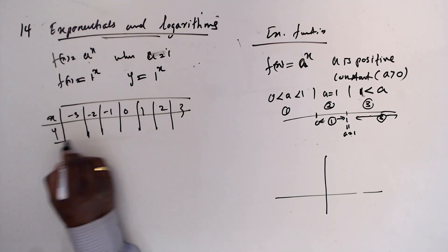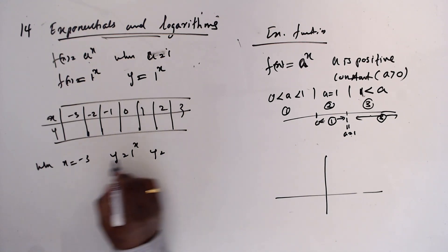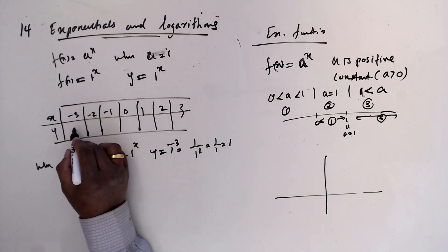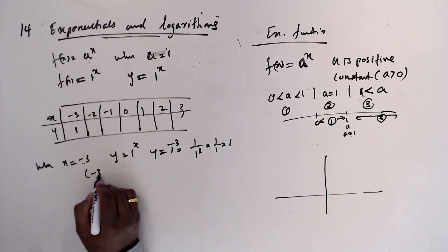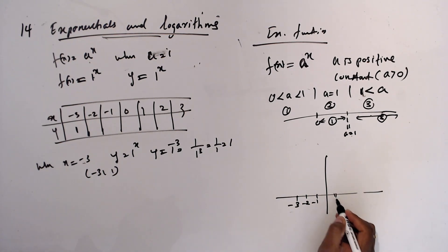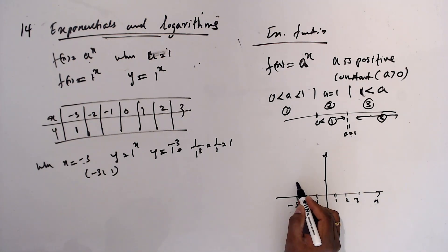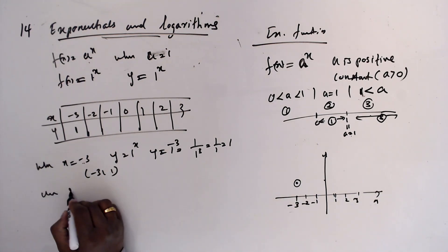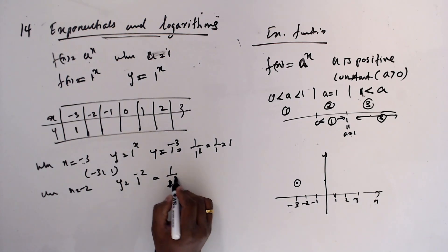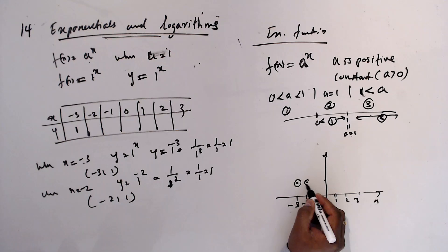When x = −3, y = 1^(−3) = 1/(1^3) = 1/1 = 1. So the coordinate is (−3, 1). When x = −2, y = 1^(−2) = 1/(1^2) = 1. Coordinate: (−2, 1). When x = −1, y = 1^(−1) = 1. Coordinate: (−1, 1). When x = 0, y = 1^0 = 1. Coordinate: (0, 1).